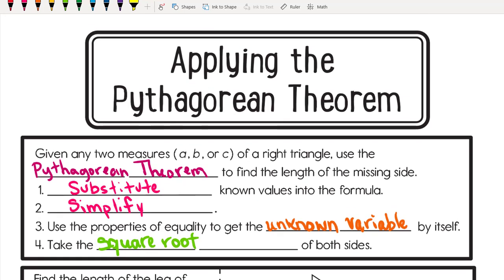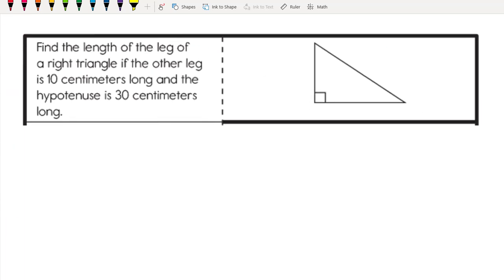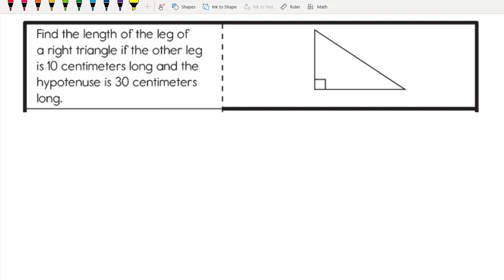Our first question is to find the length of the leg of a right triangle if the other leg is 10 centimeters long and the hypotenuse is 30 centimeters long. We have a picture to go with this. I'm going to take 10 centimeters as one of the legs. The legs form the right angle, so it could have been this one or this one. However, the hypotenuse is 30 centimeters long, the side across from the right angle.